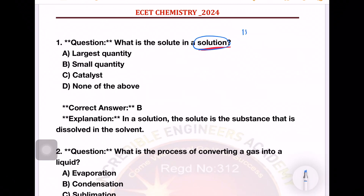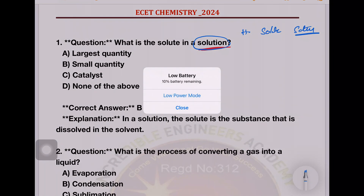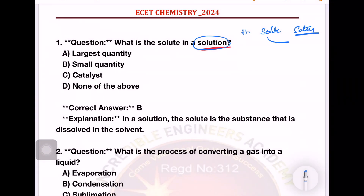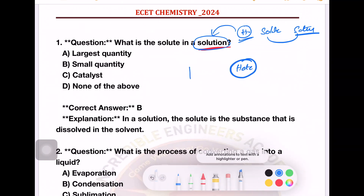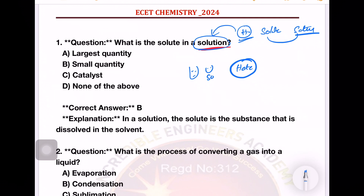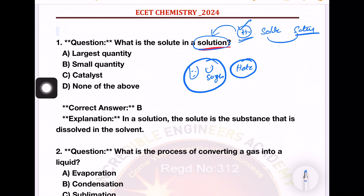A solution is a homogeneous mixture of solute and solvent. Homogeneous means an undividable substance, while a dividable substance is heterogeneous. For example, water plus sugar is homogeneous. Water plus rice is a heterogeneous solution.